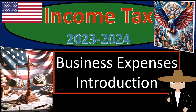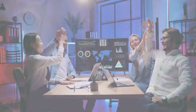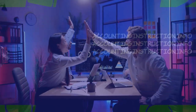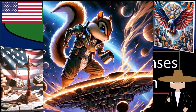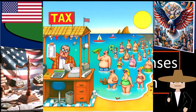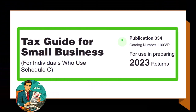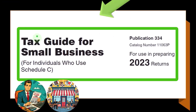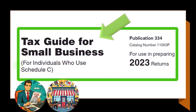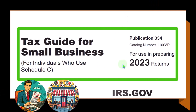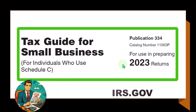Income Tax 2022-2023 Business Expenses Introduction. Get ready and some coffee, because although the best things in life are free, you know eventually the government will find some way to tax them. Most of this information can be found in Publication 334, Tax Guide for Small Business for Individuals Who Use Schedule C, Tax Year 2023, which you can find on the IRS website at irs.gov.